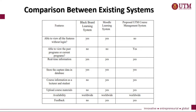The features compared are: Blackboard Learning System, Moodle, and the proposed UTM Course Management System. Blackboard and Moodle allow viewing all features without login, while our proposed UTM CMS requires login for access. Neither Blackboard nor Moodle have past program and current program views, but our proposed UTM CMS does. All three systems have real-time information and store captured data in a database. For course information and uploading course materials, Blackboard lacks this option but Moodle and UTM CMS both have it. All three systems are available worldwide.